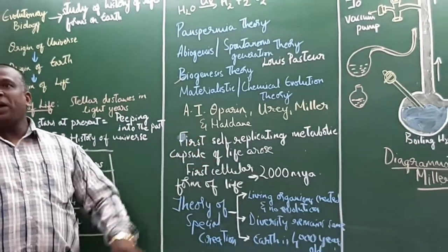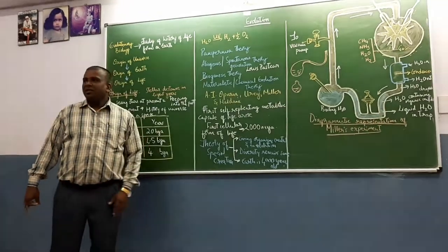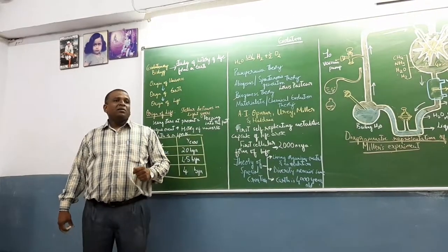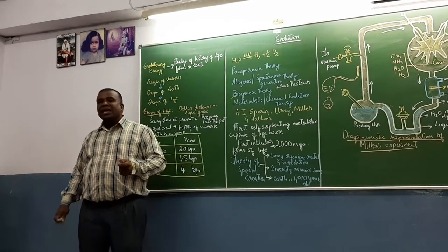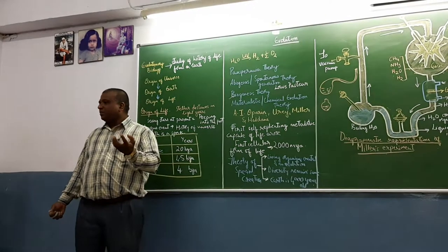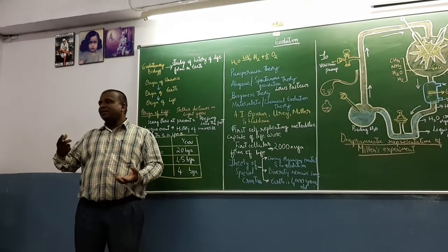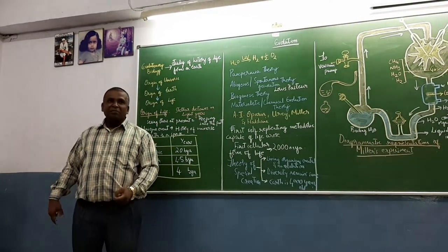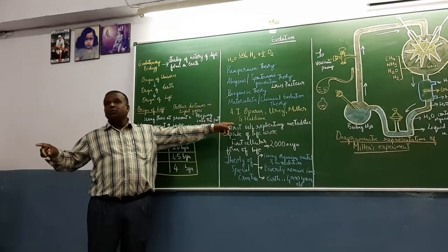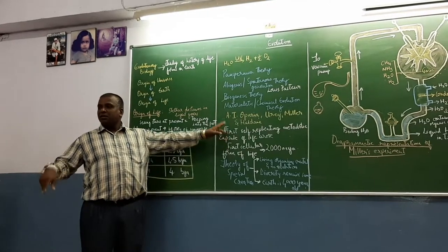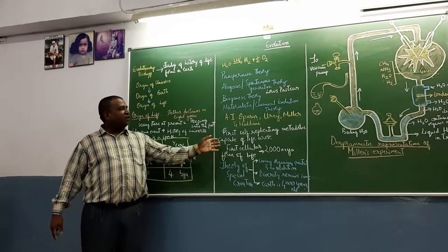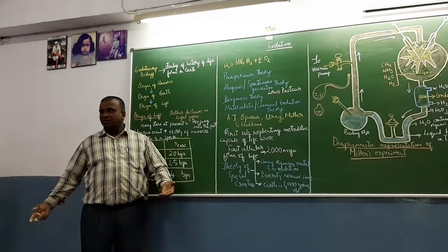But later, Oparin, a Russian biologist, and Haldane put forth another theory. Oparin wrote the book Origin of Life, where it states that life has arisen from simple chemical reactions. They formed the ocean was a primitive broth of life. This is chemical evolution theory or materialistic theory. From simple chemicals, complex chemicals form, and they formed life forms. For that, this Oparin Origin of Life book - Origin of Species by Natural Selection was by Darwin. Origin of Life was by Oparin. Chemical evolution theory or materialistic theory. First self-replicating metabolic capsule of life arose. The first cellular life form was 2 billion years ago.